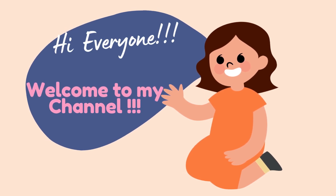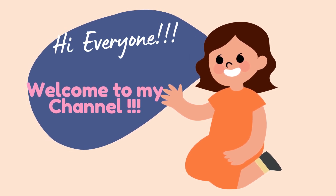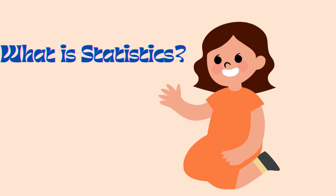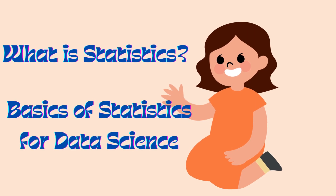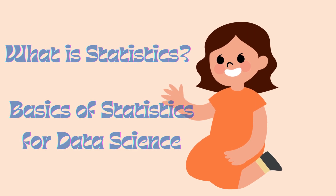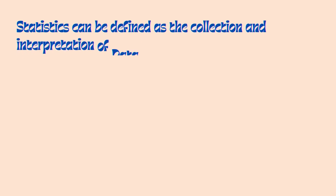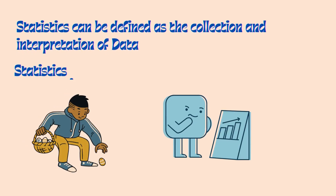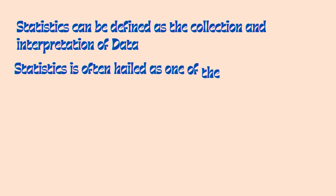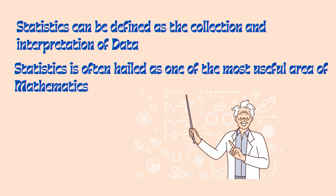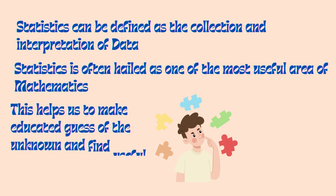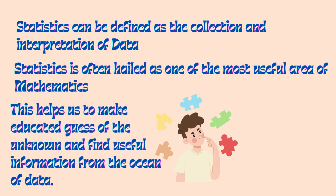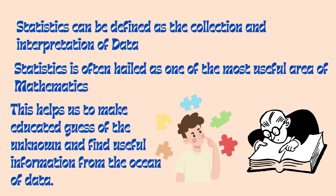Hi everyone, welcome to my channel. Today in this video we will see what is statistics and the basics of statistics for data science. Statistics can be defined as the collection and interpretation of data. Statistics is often hailed as one of the most useful areas of mathematics — it helps us make educated guesses about the unknown and find useful information in an ocean of data.